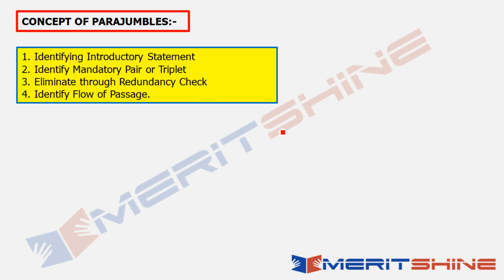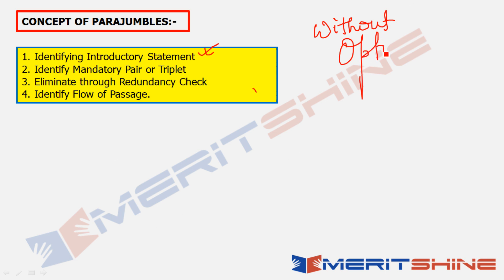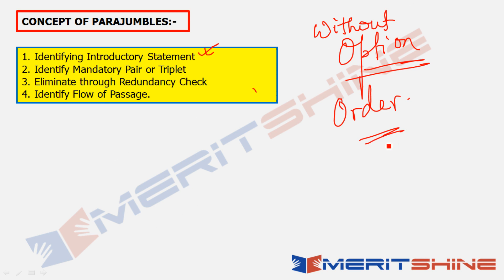Let's review the concepts of Parajumble, which we already discussed in our Parajumble 1 class, so I won't spend too much time. First: what type of Parajumble is this? This was a Parajumble without options, which means that by comparing options you will not be able to find the right order. When questions are of the without-option type, the options will not help in solving the question.